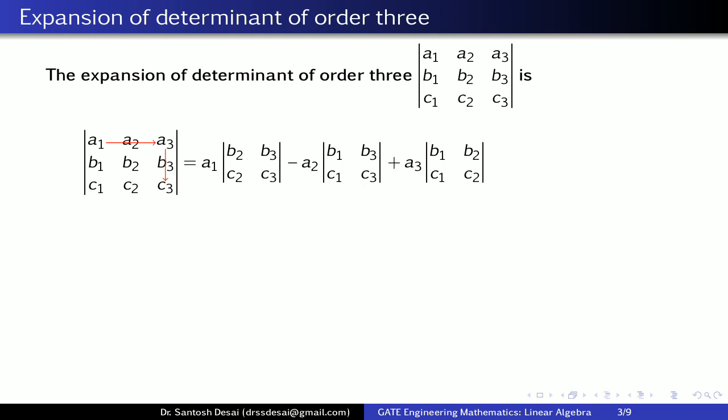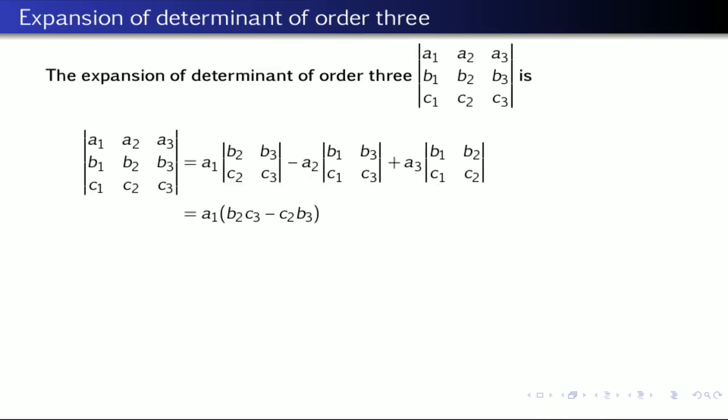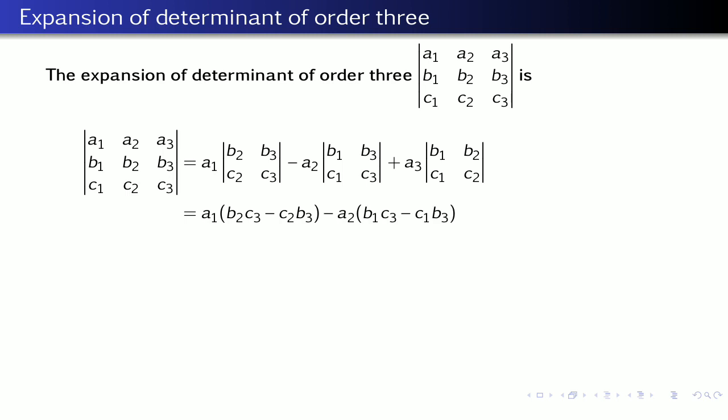We know how to expand a determinant of order 2: take the product of the main diagonal minus the product of the other diagonal. So the full expansion equals a1(b2·c3 − c2·b3) minus a2(b1·c3 − c1·b3) plus a3(b1·c2 − c1·b2). This is the value of the determinant of order 3. One can use any row or any column to expand the determinant and will get the same value.